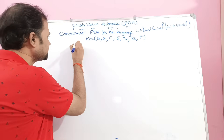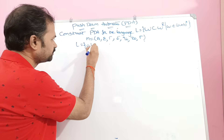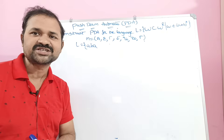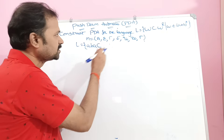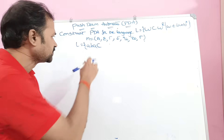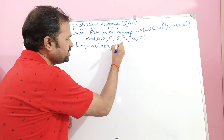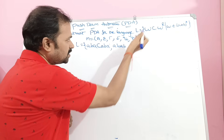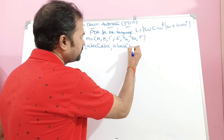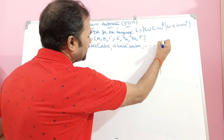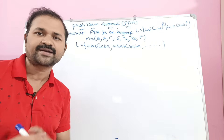Let us see what the language is. L contains strings like W = ABA, where W means string combinations of A and B. Here C stands for the center marker, and W^R means reverse of W. So reverse of ABA is ABA only. Another example: let the string be ABAB, then the center marker C follows, and the reverse of ABAB is BABA. So likewise we can have any number of strings.